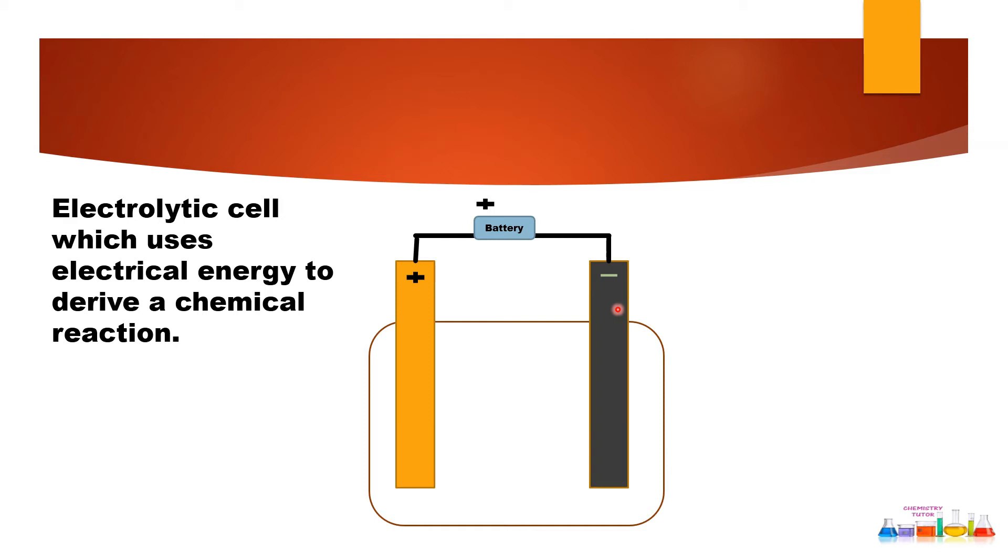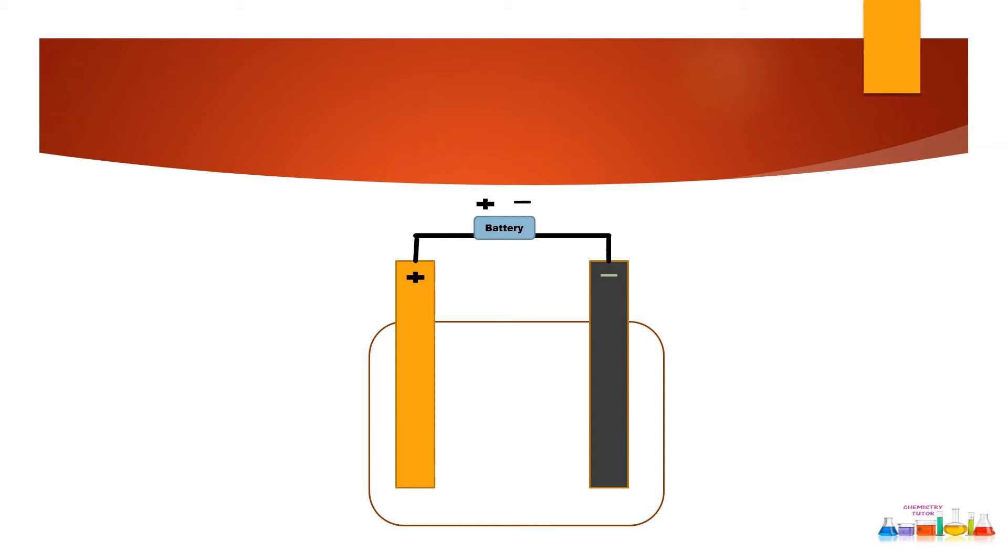This black one you can see is cathode. Negative charges on it. It is cathode because it is attached with the negative terminal of the battery. One very important thing which we need in this electrolytic cell is an electrolyte.